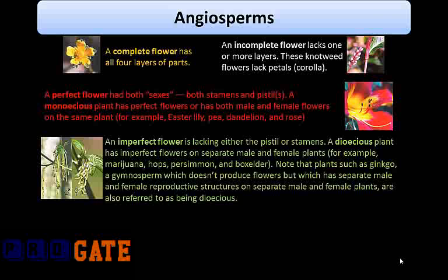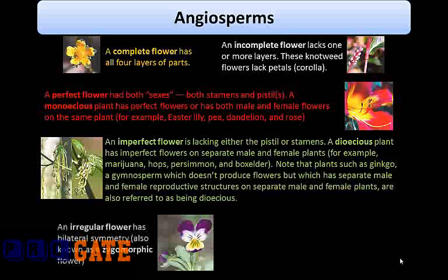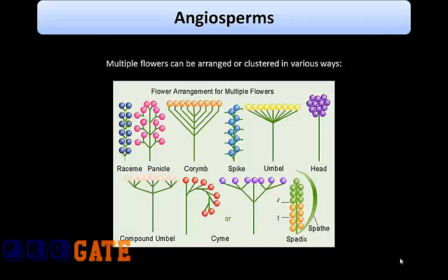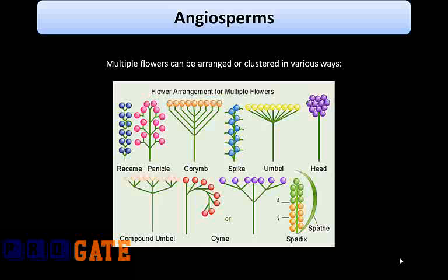Note that plants such as ginkgo — a gymnosperm which doesn't produce flowers — but which has separate male and female reproductive structures on separate plants, are also referred to as being dioecious. An irregular flower has bilateral symmetry and is also known as a zygomorphic flower; a regular flower is radially symmetric. Multiple flowers can be arranged or clustered in various ways, including raceme, panicle, corymb, spike, umbel, head, compound umbel, cyme, or spadix arrangements.